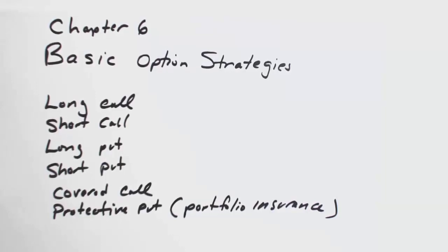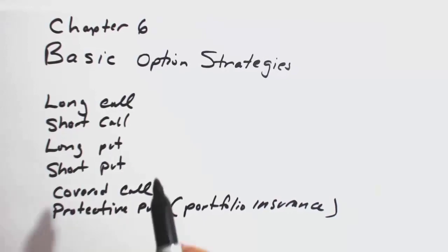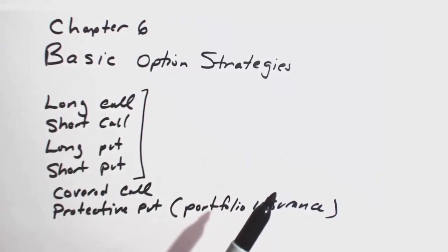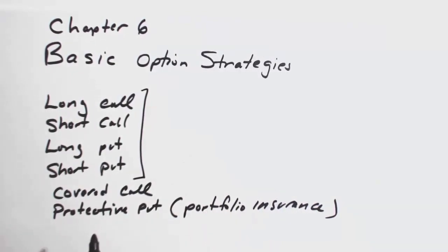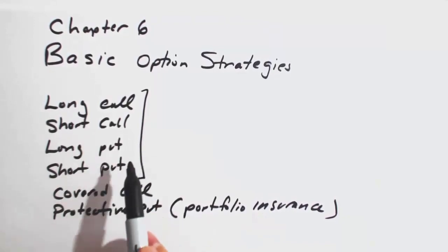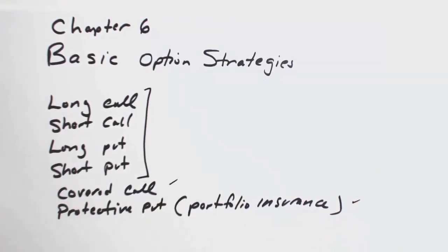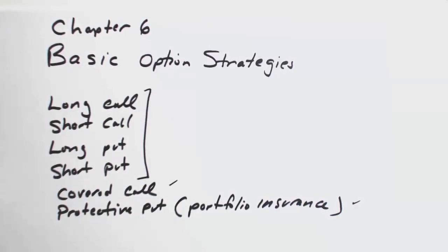Welcome to Chapter 6: Basic Option Strategies. We're going to be looking at the payoffs and profits associated with the building blocks of financial engineering. The building blocks are these first four items: a long call, short call, long put, and short put. Then we're going to combine some of these option positions with the stock to do what's called a covered call and portfolio insurance, or what's often called a protective put. These are by far the most common strategies out there that you can employ.